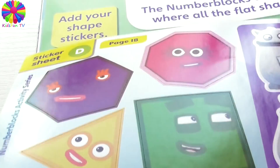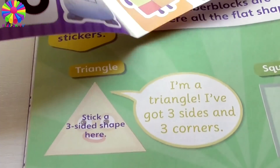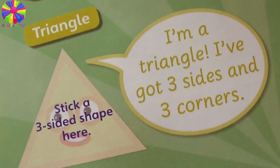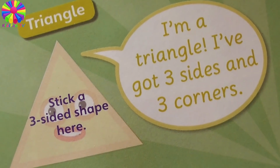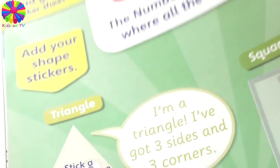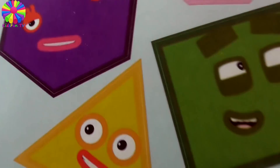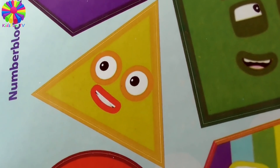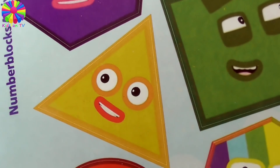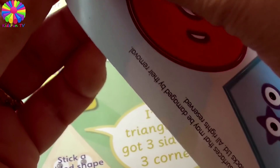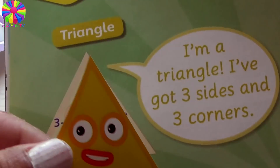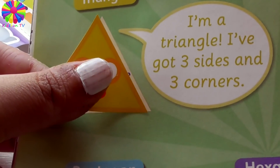...and now they've become shapes! Let's start with the first one. Can you recognize this Numberblock? 'I'm a triangle — I've got three sides and three corners.' Which shape is it? It's got three sides and three corners — it's a triangle! Numberblock Three is a triangle.